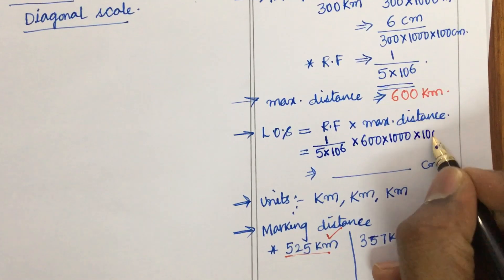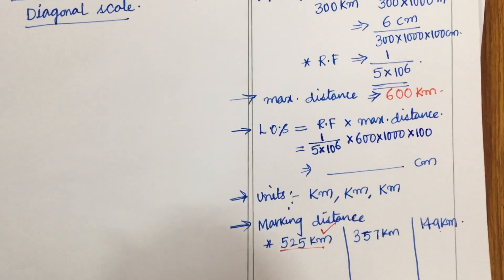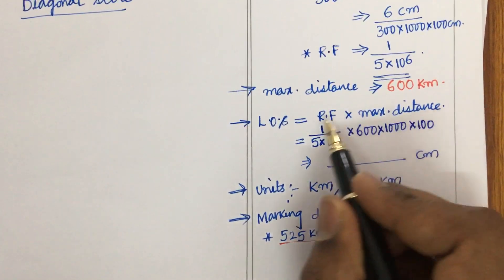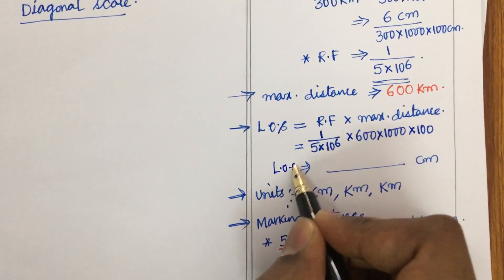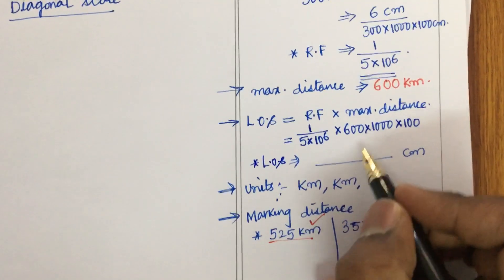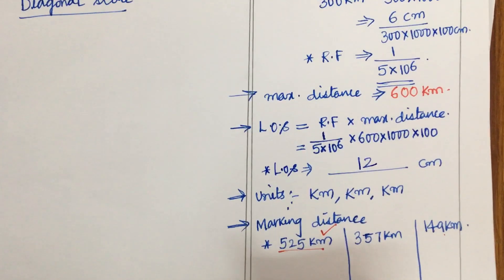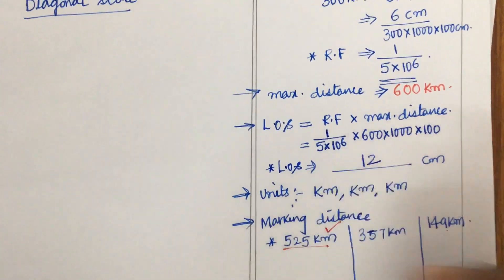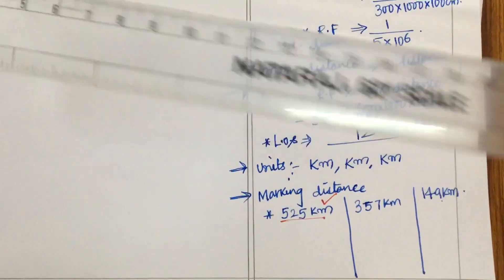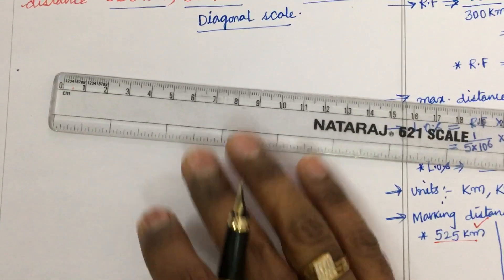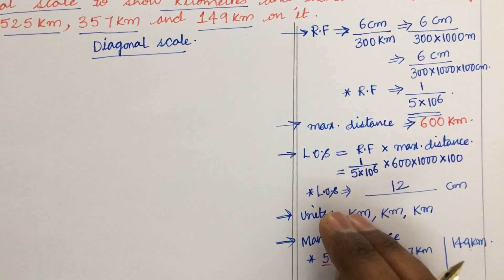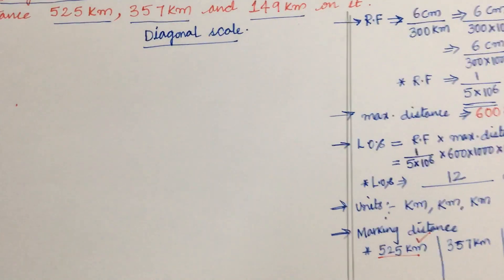Converting kilometers to centimeters — kilo is 1000, and meter to centimeter is 100. Upon calculation, putting it in the calculator, it is found to be 12 centimeters. So the length of the scale is 12 centimeters. You are supposed to put it in the calculator and work it out. This is how you work out the calculation part before going to the construction process, and this part also carries certain marks.